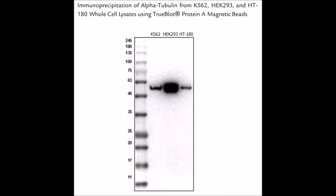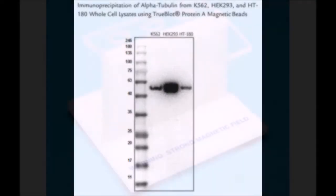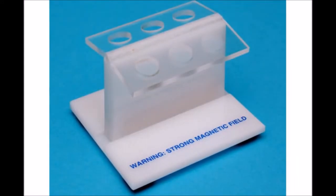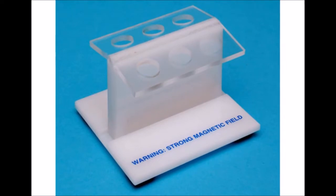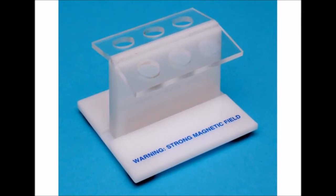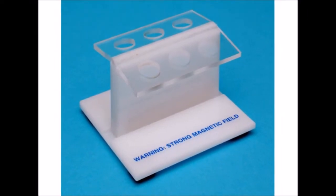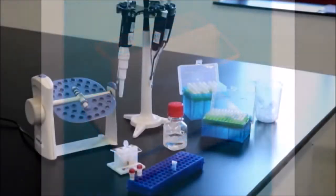In this video, we will briefly show you how to use protein A or protein G conjugated magnetic beads for immunoprecipitation experiments. Immunoprecipitation is performed by first forming an antigen-antibody complex and then incubating the complex with protein A or protein G magnetic beads.